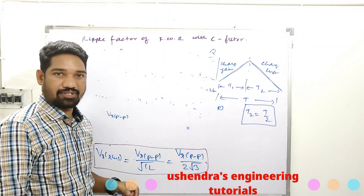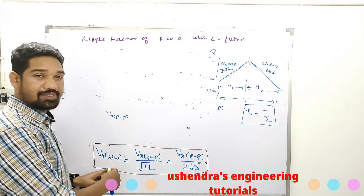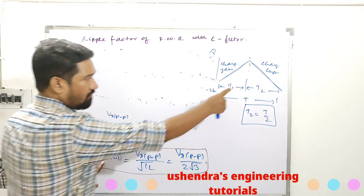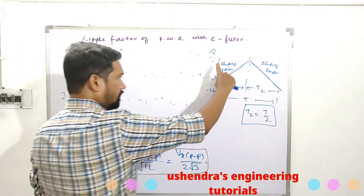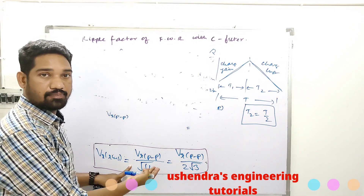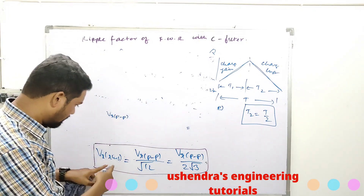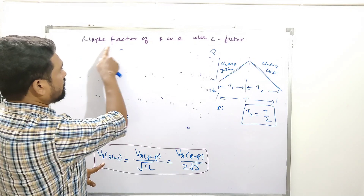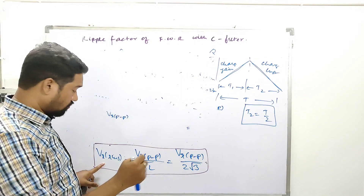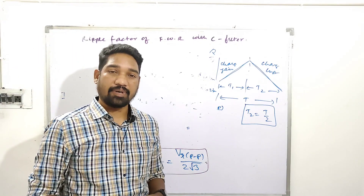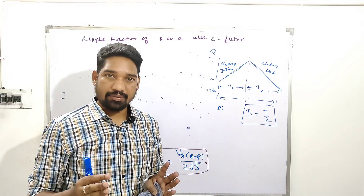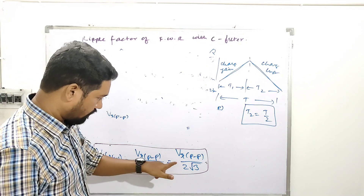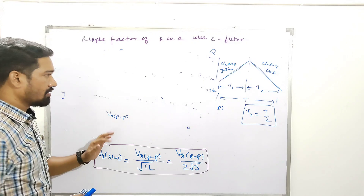Hi, yet another important video from the playlist Electronic Devices and Circuits, and a continuation to my previous video. We have to derive the expression for ripple factor of a capacitor filter full-wave rectifier. In between the derivation, you come across a triangular waveform, and the RMS value where Vr is peak-to-peak. I have a proof of this in my previous video — I didn't erase it intentionally because I wanted to continue from this point.